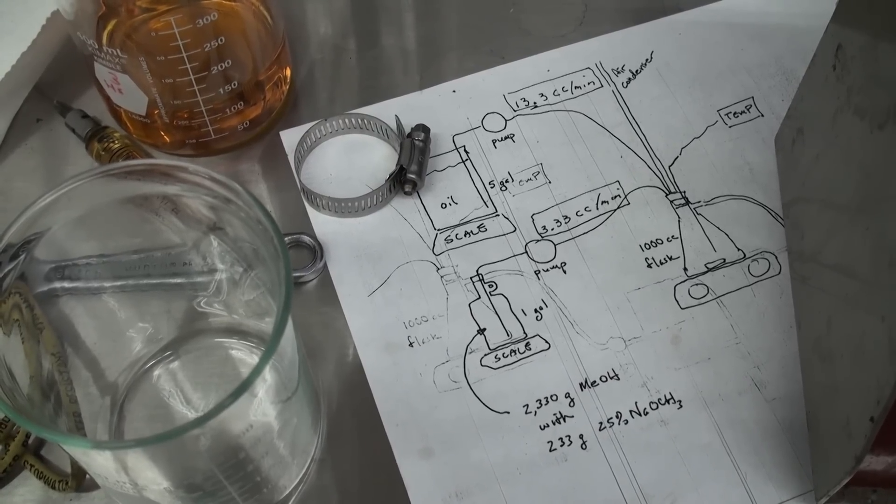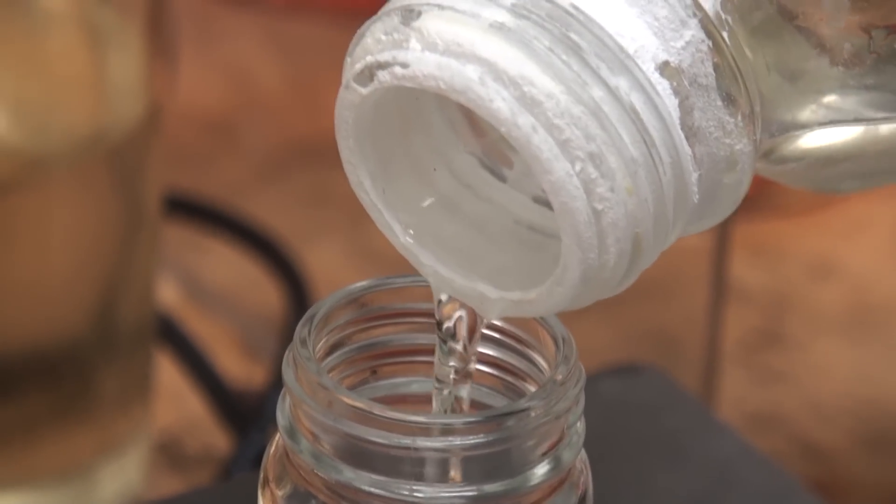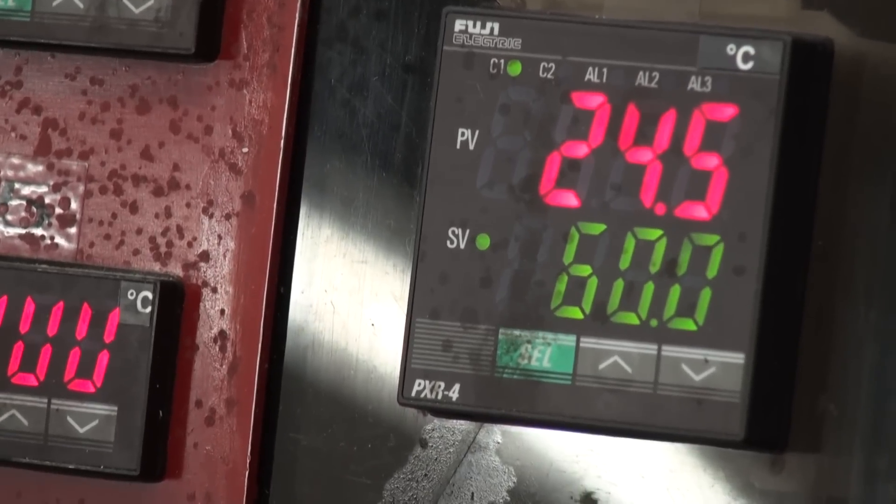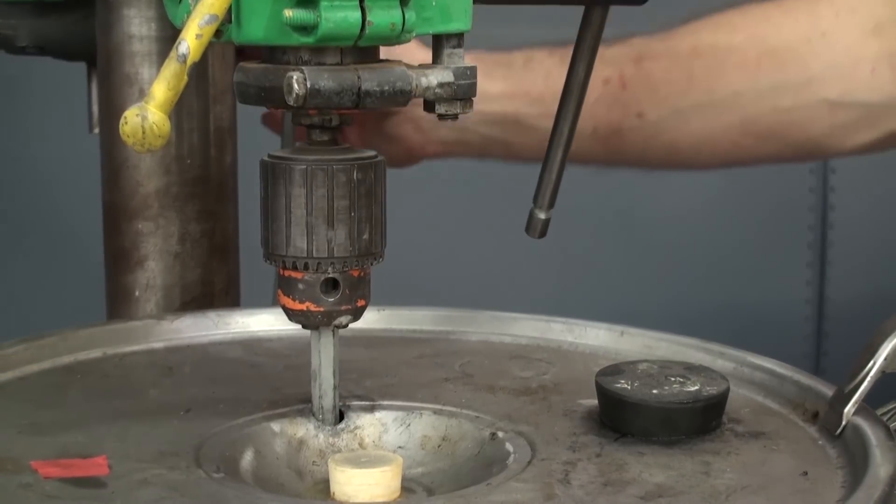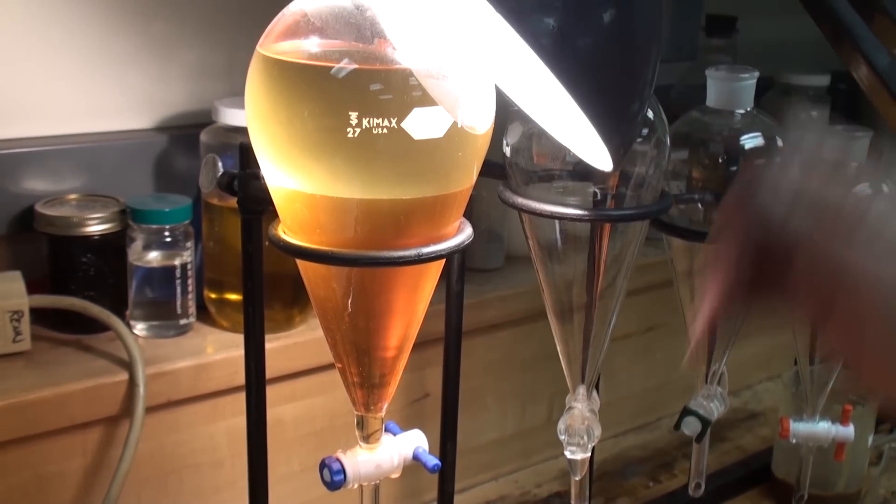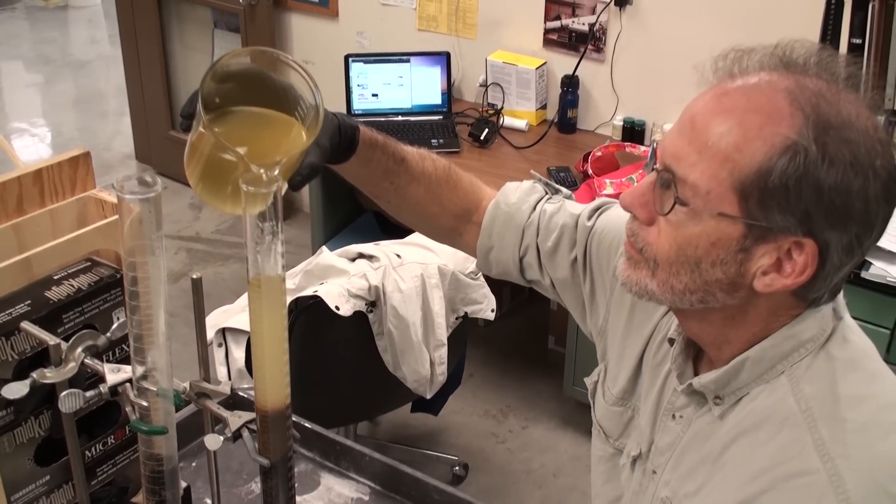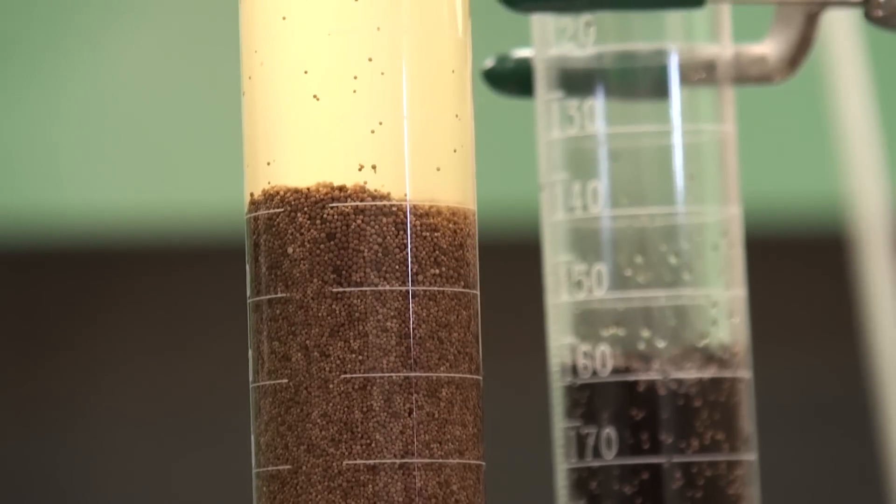The process is relatively simple. Add a certain amount of alcohol to your catalyst, combine the mixture with your feedstock, then heat and agitate for a short period of time. The result is a layer of biodiesel and a layer of glycerin. Remove the glycerin by draining it off the bottom and then use a wash process to remove contaminants.